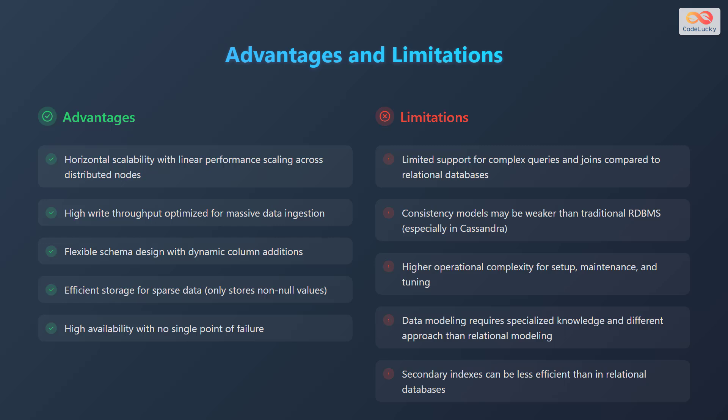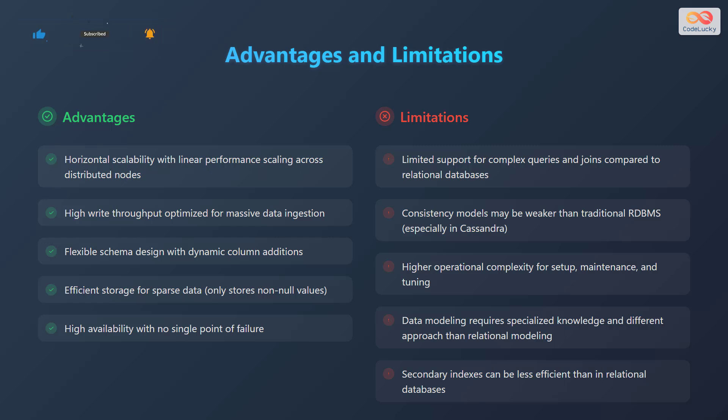However, they also have limitations, such as limited support for complex queries and joins compared to relational databases. Their consistency models may be weaker than traditional RDBMS, especially in Cassandra. They have higher operational complexity for setup, maintenance, and tuning, and require specialized knowledge and a different approach to data modeling than relational modeling. Finally, secondary indexes can be less efficient than in relational databases.